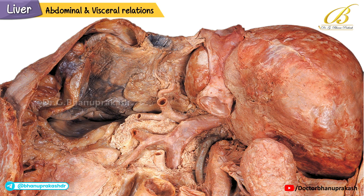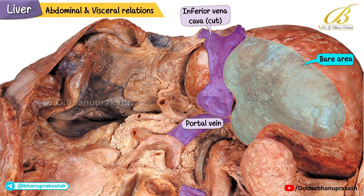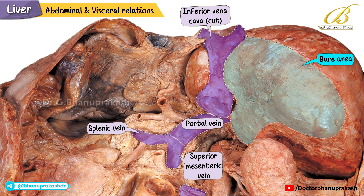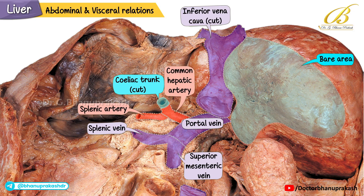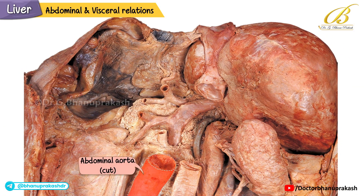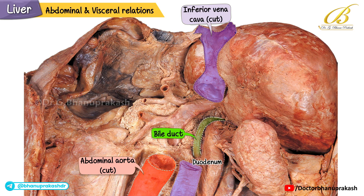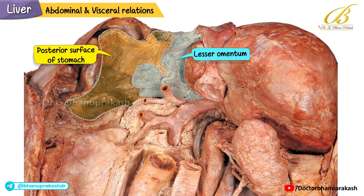This image shows the abdominal and visceral relations of the liver as seen from the posterior abdominal wall. At the top you can see the bare area of the liver and the large inferior vena cava running alongside it. The formation of the portal vein is also clearly visible here, where the superior mesenteric vein joins the splenic vein. Moving upward, notice the celiac trunk and its major branches, the splenic artery and the common hepatic artery. We can also see the cut ends of the abdominal aorta and the inferior vena cava. In front of these structures lie the bile duct and the duodenum. The posterior surface of the stomach and the lesser omentum are also visible, along with the cut end of the pancreas.